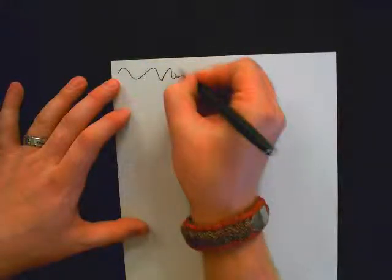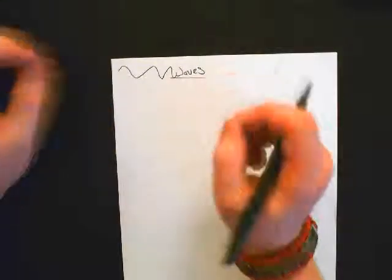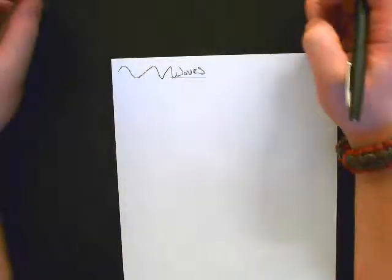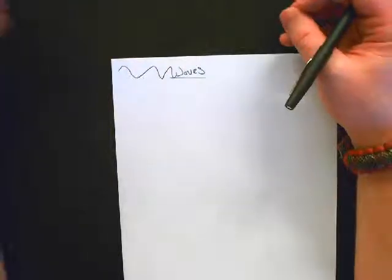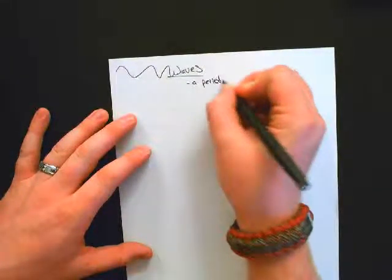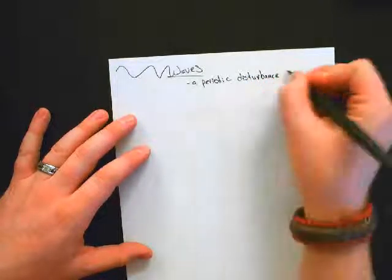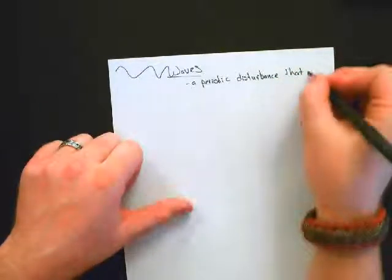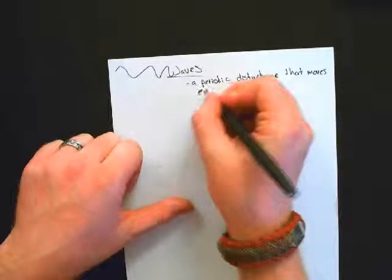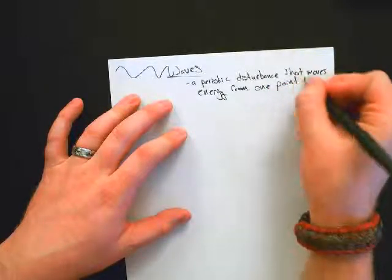Waves. When we're talking about a wave, a wave is going to be defined as a periodic disturbance in a substance that moves energy from one point to another. A periodic disturbance that moves energy from one point to another.